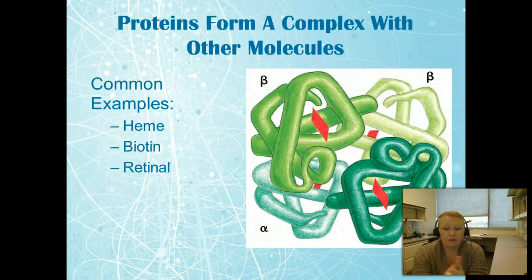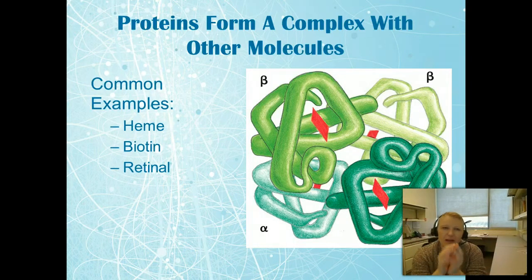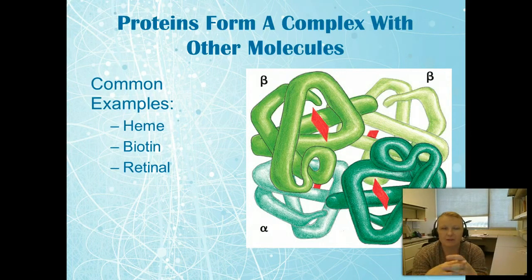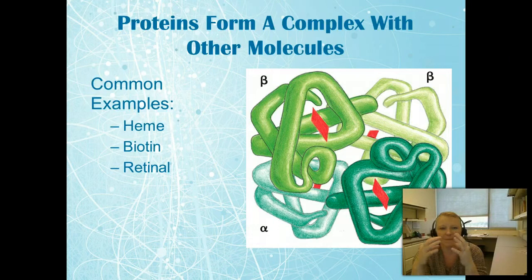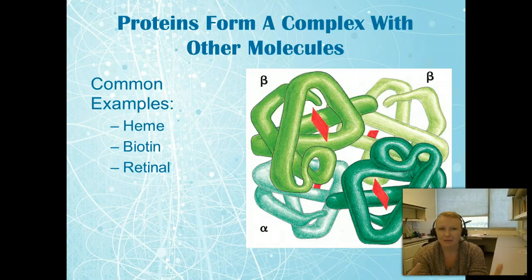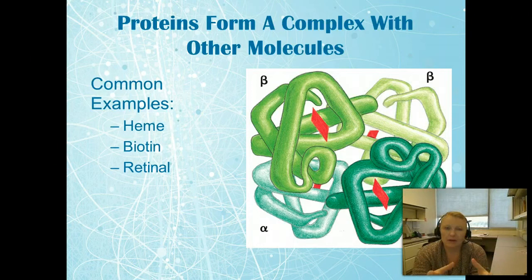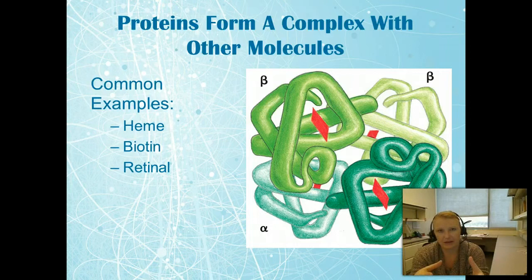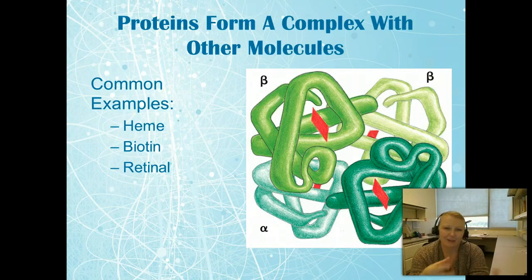Before we get to protein control, we need to mention that proteins can form complexes with other molecules. We talk about protein-protein interactions, but they can also form complexes with inorganic molecules, carbohydrates, and lipids. A common example is heme combined with hemoglobin, which allows the hemoglobin molecule to carry oxygen — it's the actual heme that binds the oxygen. These things can work in concert to perform the function they need to serve.